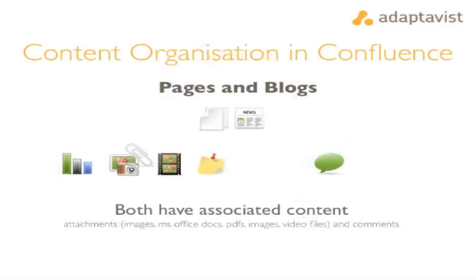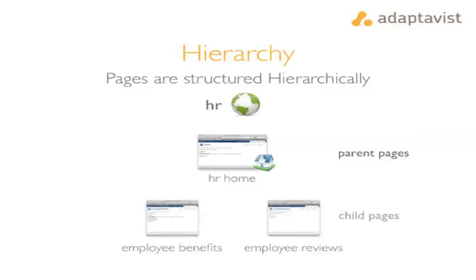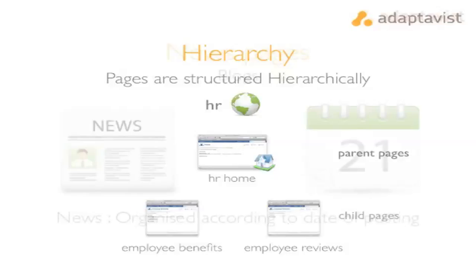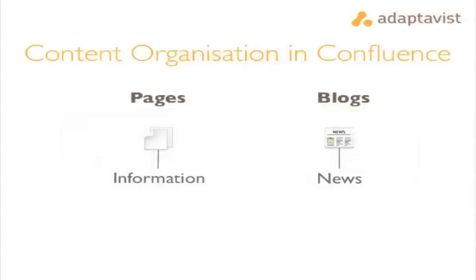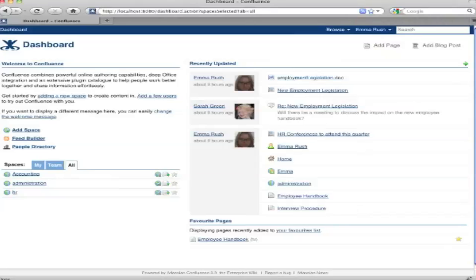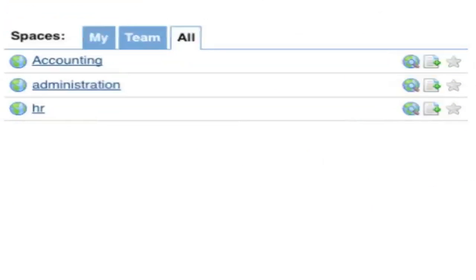Spaces contain pages and blog posts, and pages and blog posts have associated attachments and comments. The main difference between a page and a blog post is in how they're added to the space: pages sit in a hierarchical structure, while blogs are added to the space by the date they were submitted. In terms of purpose, pages are for information and blog posts are for news items.